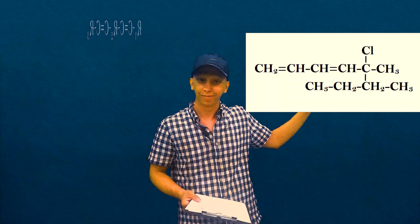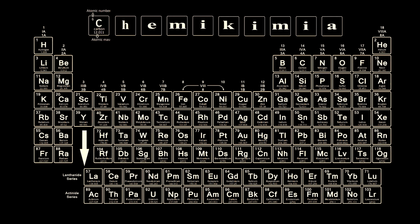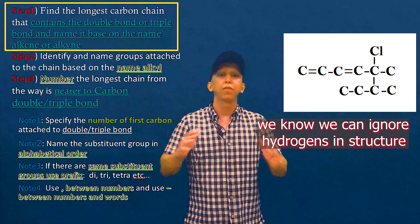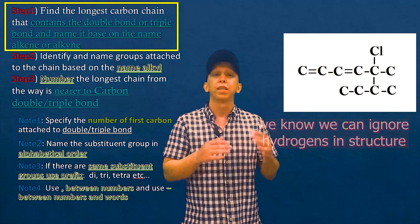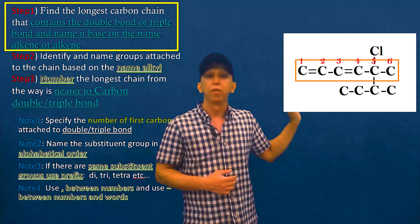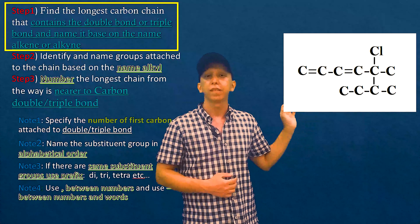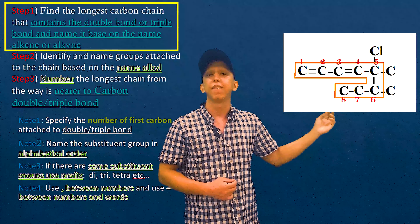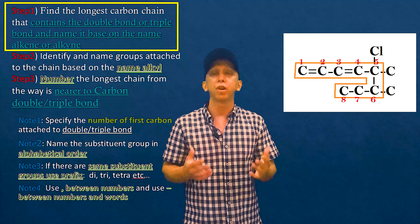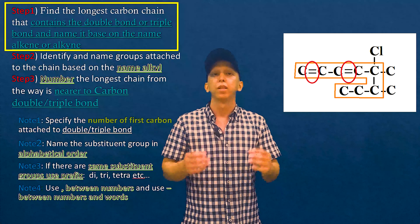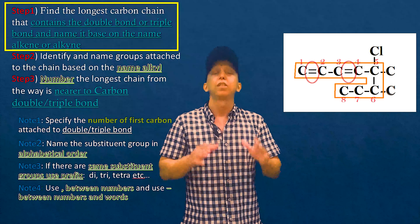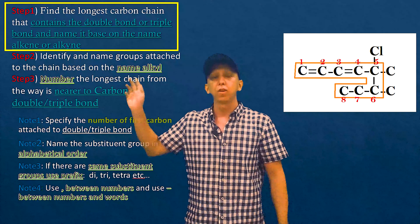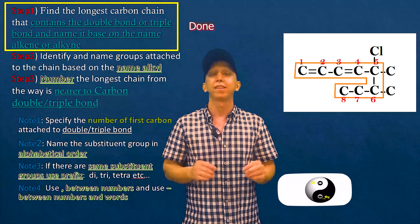Let's name our structure. As you see, in step one we have to find the longest carbon chain that the double bond is on the main chain. If we start naming in a straight way we have one, two, three, four, five, six carbons. But if we start naming from top to bottom in the curved way we have one, two, three, four, five, six, seven, eight carbons. So we have more carbons and the double bonds are contained in this way, so we choose it as our main chain.